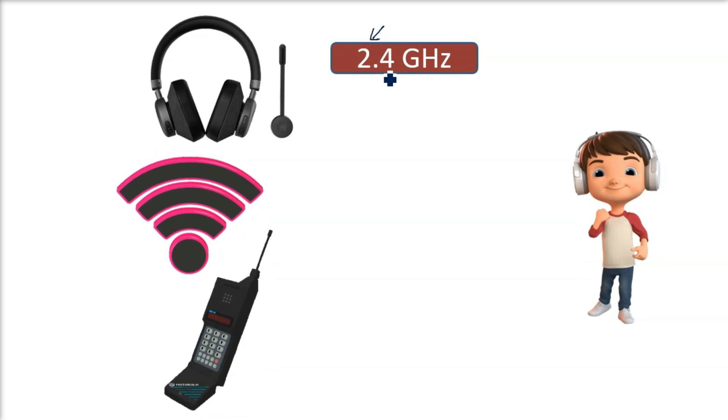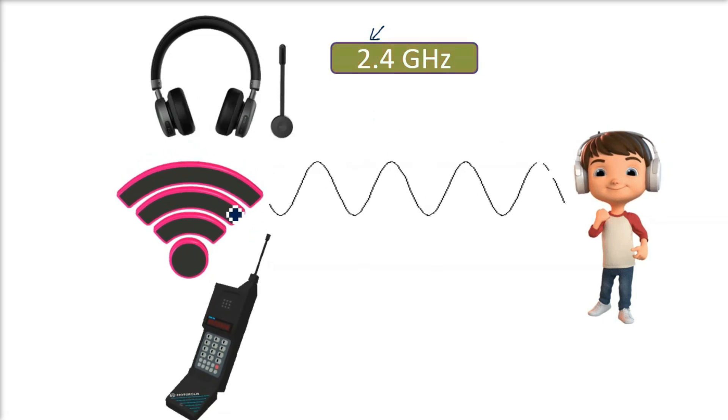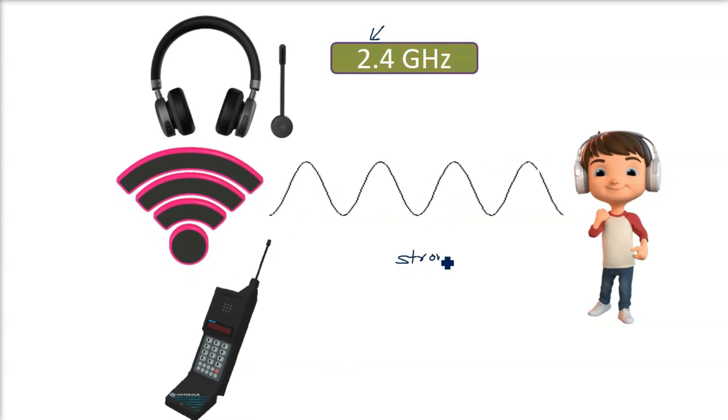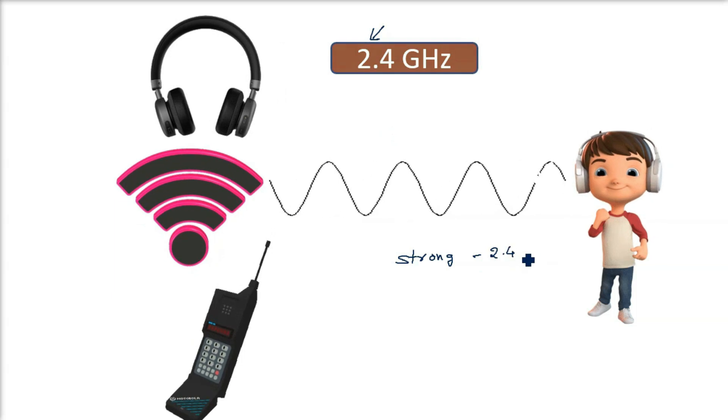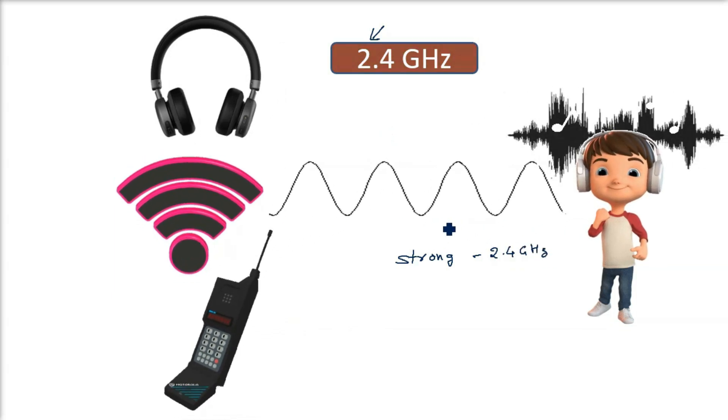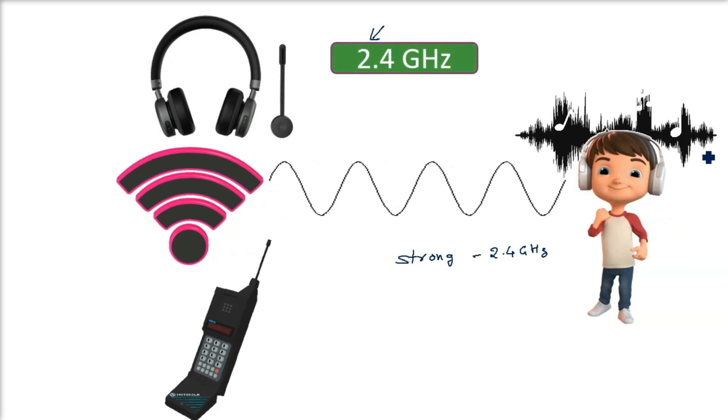If one device like a Wi-Fi router sends a strong signal on the same frequency your headphones are using, it can interfere with your music. What is the result? Your music cuts off or becomes choppy.